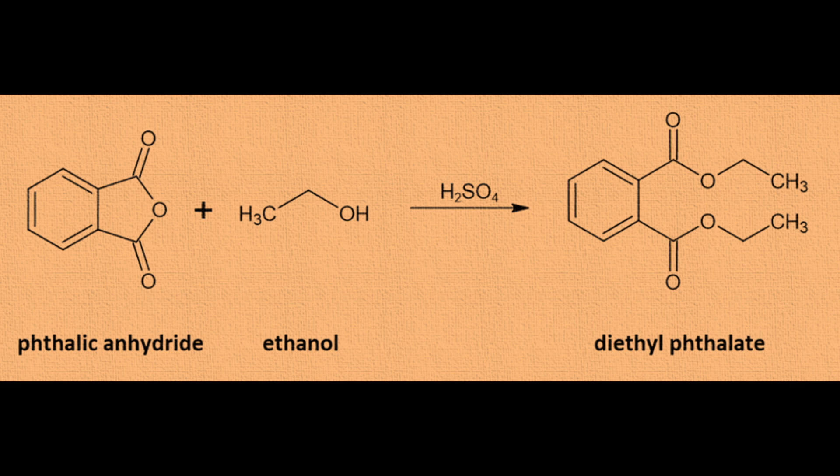To obtain diethyl phthalate, we will use phthalic anhydride instead of phthalic acid, ethanol with a concentration of 99%, and concentrated sulfuric acid as a catalyst.